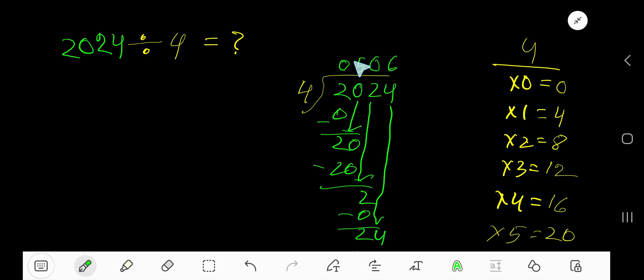Your remainder is zero, so we are done. 0, 5, 0, 6 means 506 is our answer.